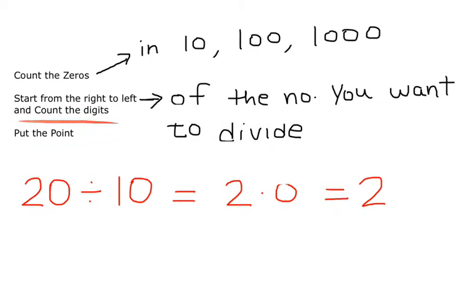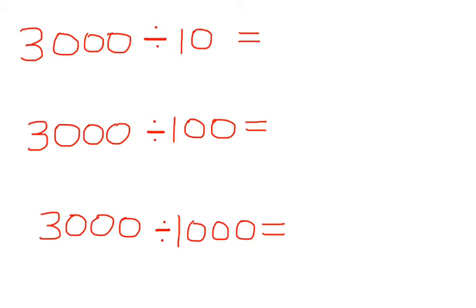Like in this example, 20 divided by 10. In 10 we have one zero, so we will start counting the digit from right to left one time. We'll count one digit and then put the point. So our answer is 2.0 or 2. Let's understand this with a few examples.